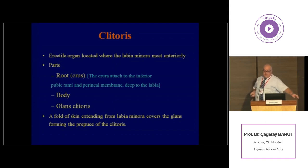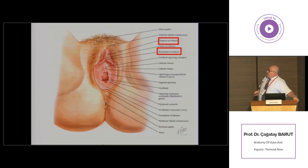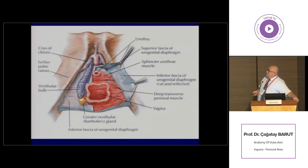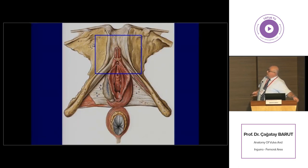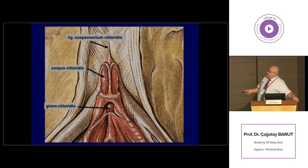The clitoris is the erectile structure located at the anterior aspect of the labia minora. It is composed of a pair of crura, a body, and a glans part. Here we can see the placement of the glans, and the prepuce and frenulum of the clitoris are shown here. If we remove the skin and subcutaneous tissue, we can see the crura of the clitoris, which are attached to the ischiopubic rami on both sides. They course anteriorly and unite to form the body of the clitoris, and the final part, the glans, is shown here.